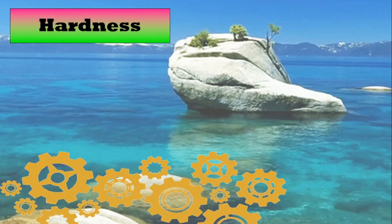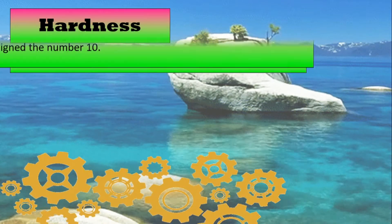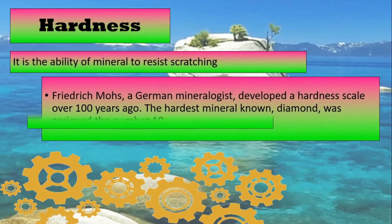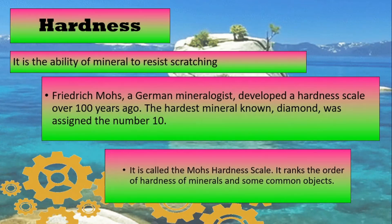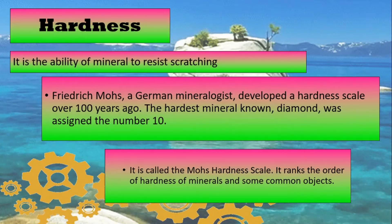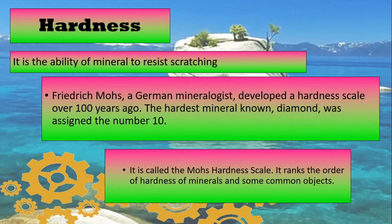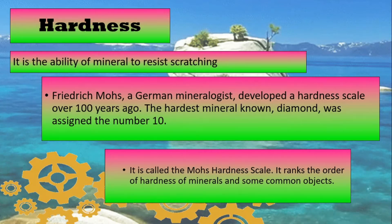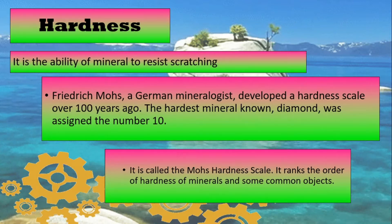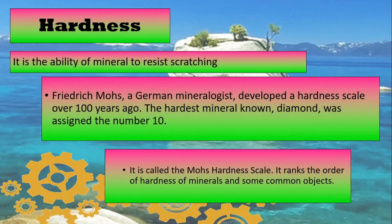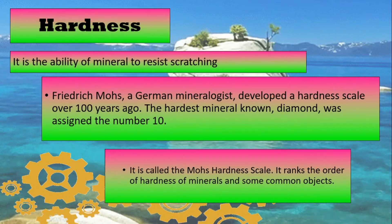The next physical property is hardness. Hardness is the ability of the mineral to resist scratching. Frederick Mohs, a German mineralogist, developed a hardness scale over 100 years ago. The hardest mineral known is diamond and was assigned the number 10. It is called the Mohs hardness scale and it ranks the order of hardness of minerals and some common objects.